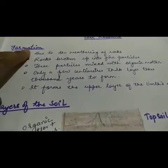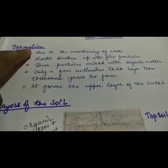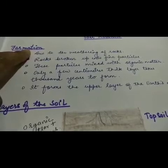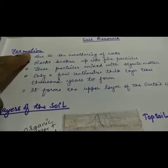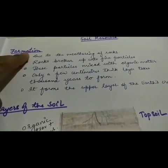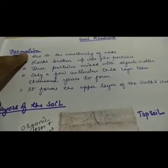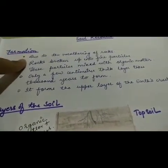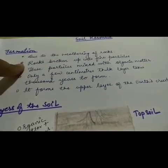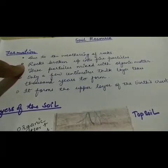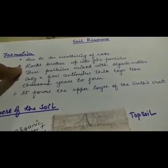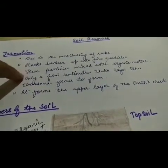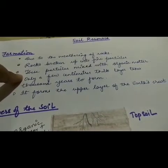Let us have a look at this chart on formation of soil. Soil forms the upper layer of the earth's crust. It is made up of loose rock fragments and organic matter. Soil is formed when rocks are broken up into fine powder by weathering. Weathering means the breaking down of big rocks by natural agents. Rocks broken up into fine particles then mix with organic matter.